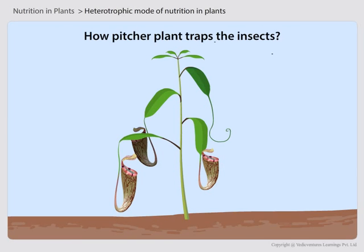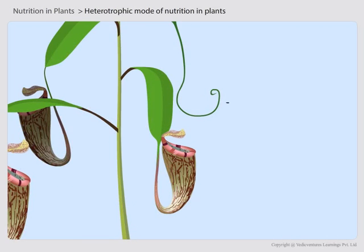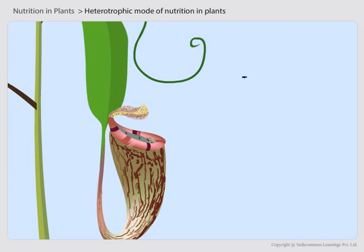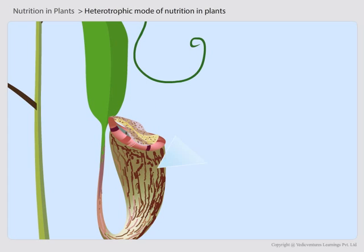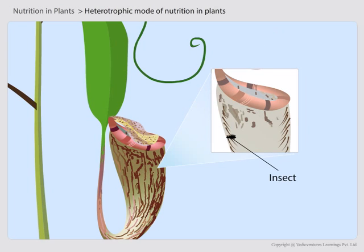Let us now learn how the pitcher plant traps insects. When an insect lands in the pitcher, the lid closes. The trapped insect gets entangled in the hairs present inside the pitcher. The insect is then digested by the digestive juices secreted in the pitcher. In this way, pitcher plants trap insects.